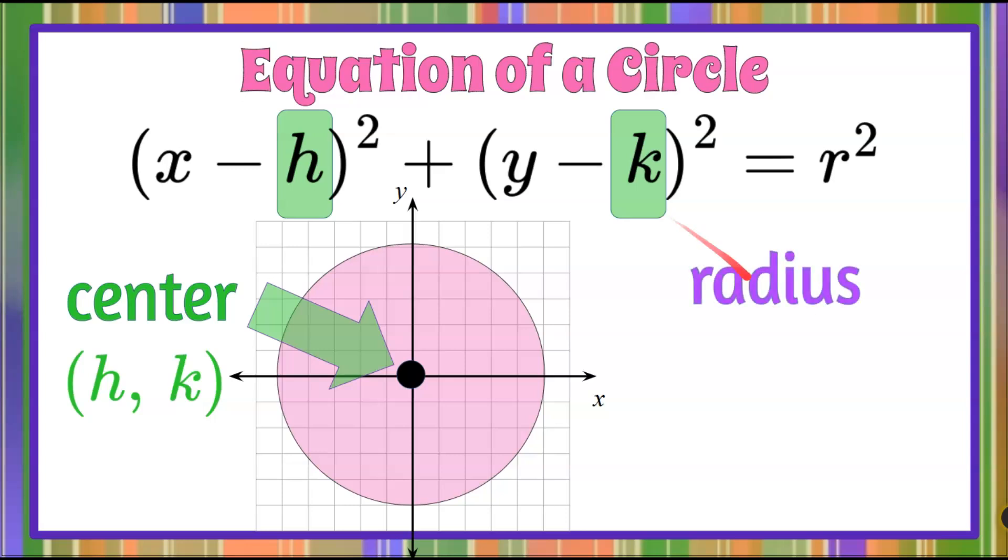The other piece of information you need to write this equation is the radius, which is the line segment from any point on the circle to the center. That's the length of your radius, and we write it r squared.